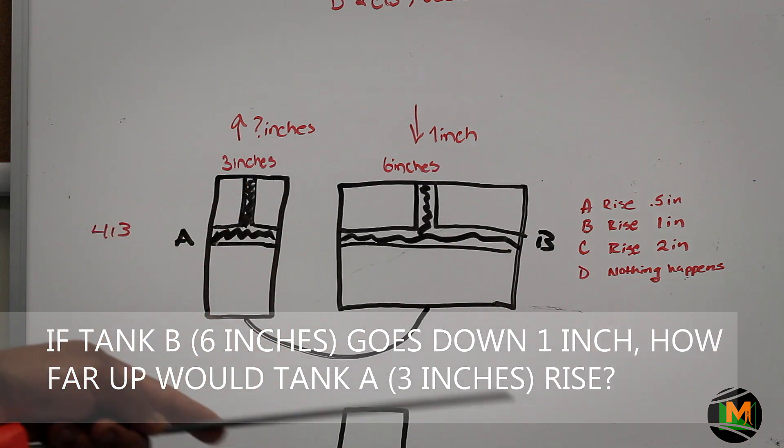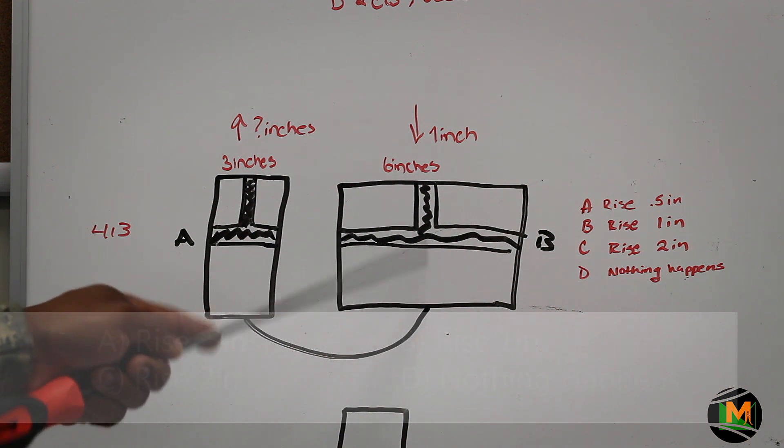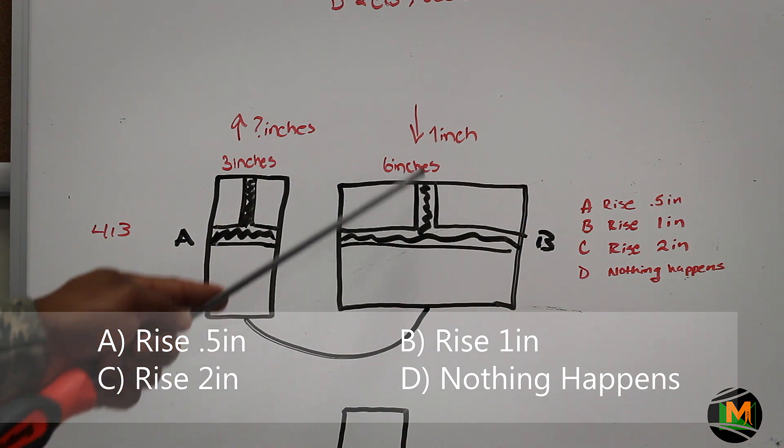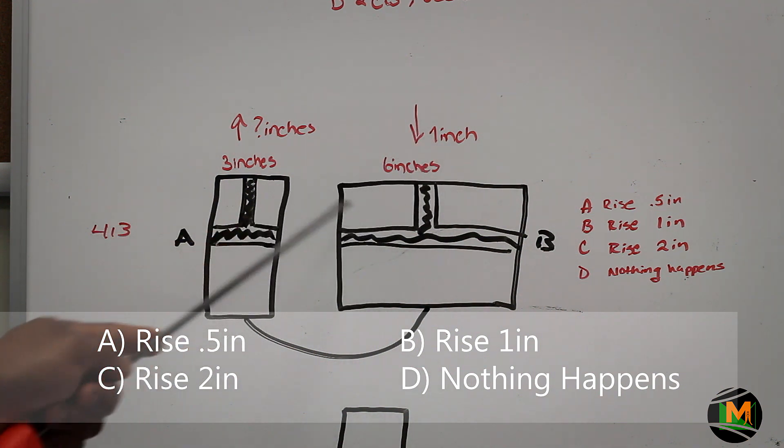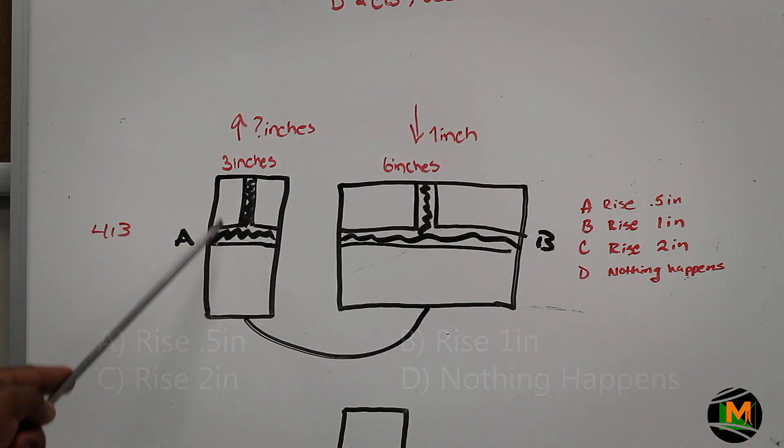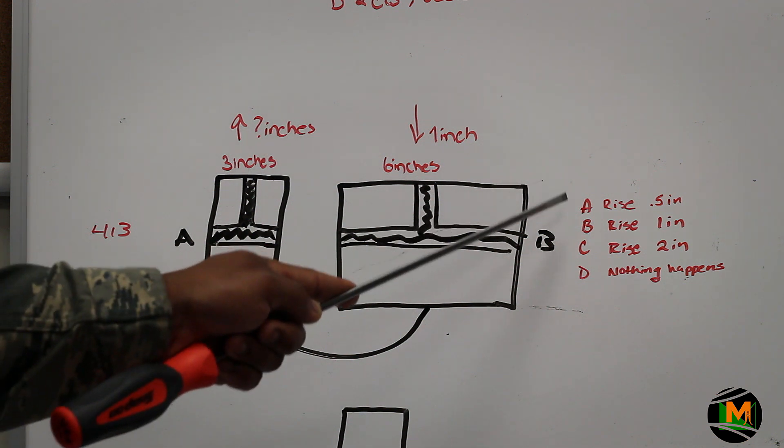Tank B is 2 times the width of tank A. Therefore, if this goes down 1 inch, you just multiply that by 2. So tank A would go up 2 inches. So your answer would be option C, which is 2 inches.